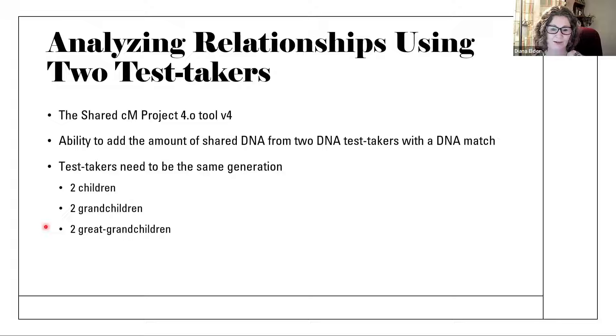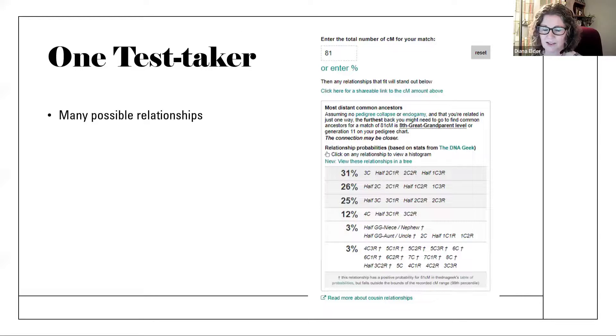I do have the DNA results of two people in the same generation. They're a generation closer than me to my paternal side. And when I put in just one of the amounts, I got just 80, she matches 81 centimorgans, and I have a lot of possibilities here. So you can see that maybe it would be a little difficult to narrow down with just this one test taker.